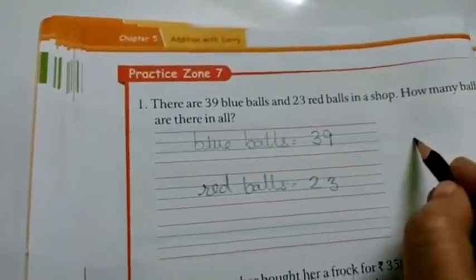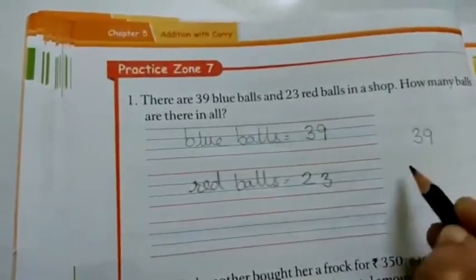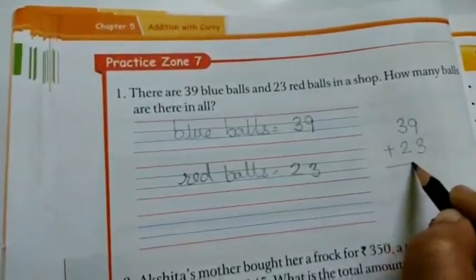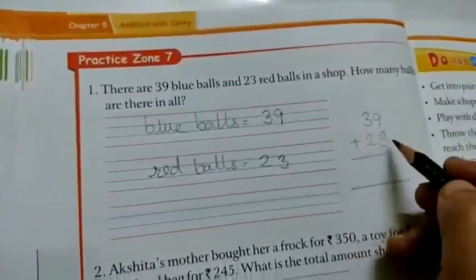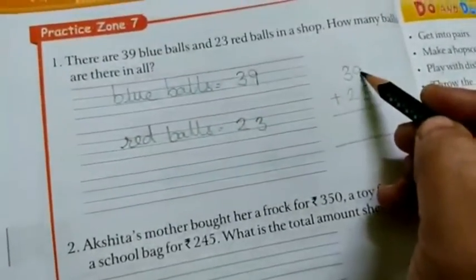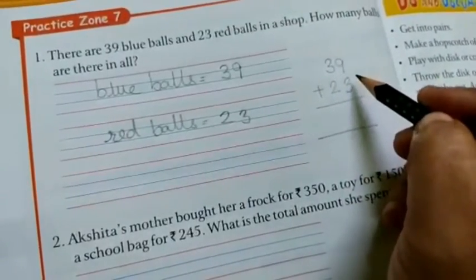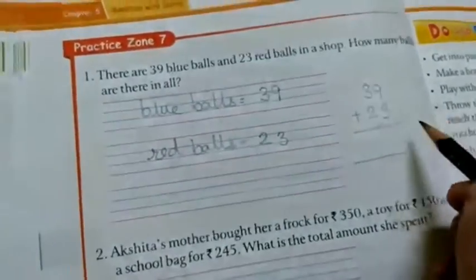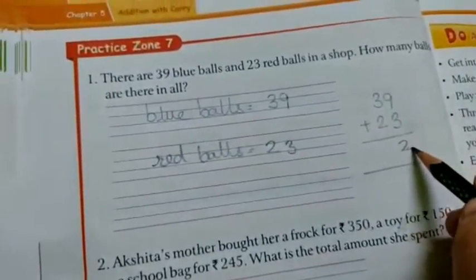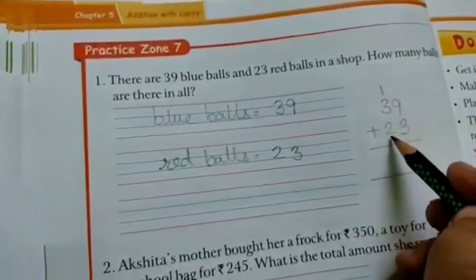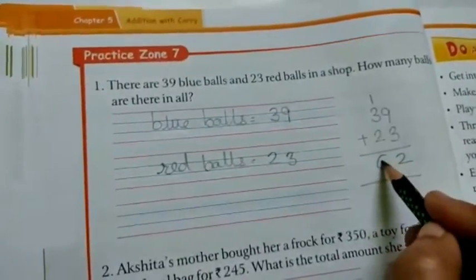So when you are going to add here, 39 plus 23. So 9 plus 3, keep 9 in your mind and 3 on your fingers. 9, 10, 11 and 12. 2 here down, 1 carry over. 3 plus 1, 4, plus 2, 6.